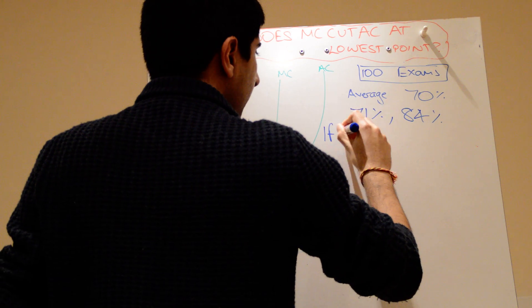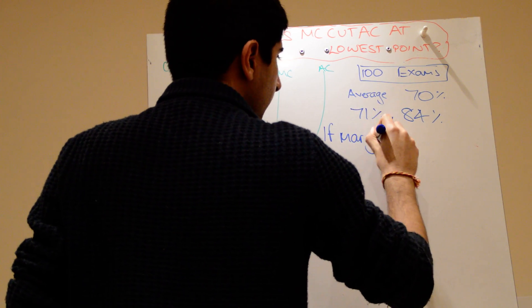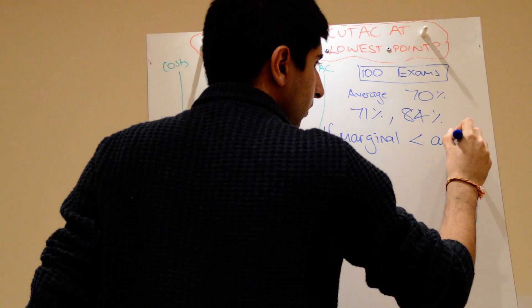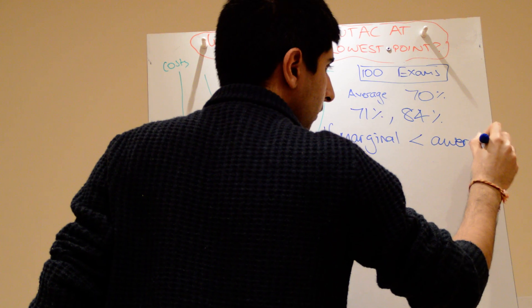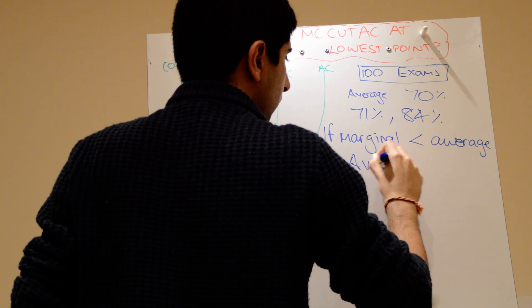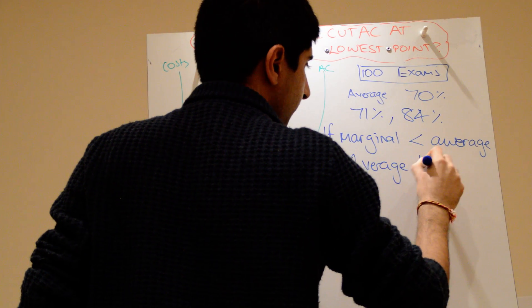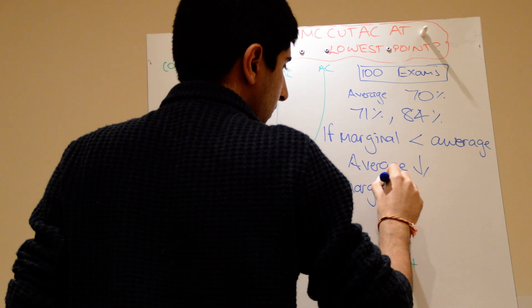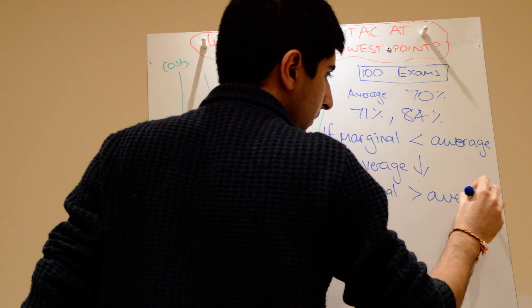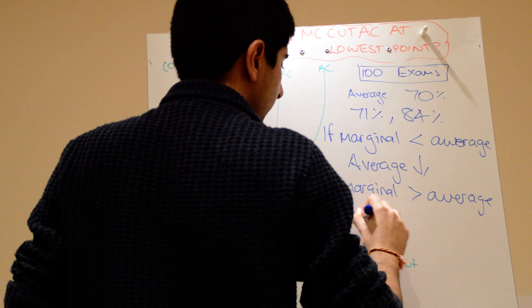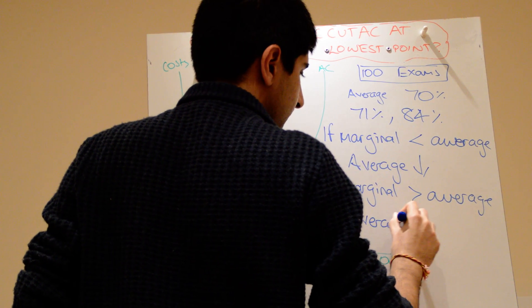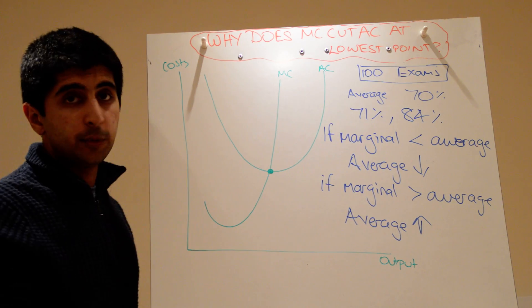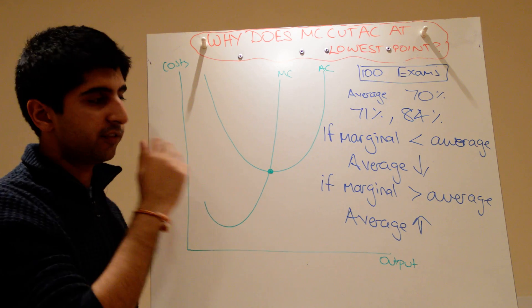Let's say here, if the marginal effect, or just the marginal, is less than the average, the average will fall. Whereas if the marginal effect is greater than the average, the average will rise. Those two laws are indisputable, and hopefully they make logical sense after that.